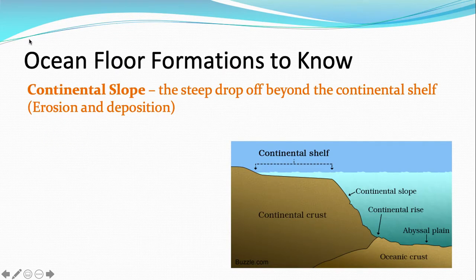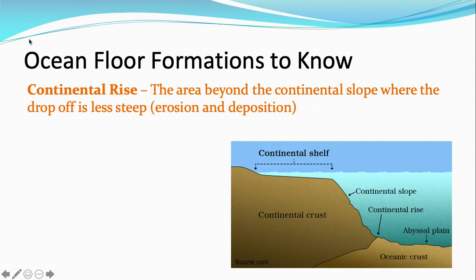The continental slope, if you go beyond the shelf, is the steep drop-off beyond the continental shelf, so it gets a lot deeper where the continental slope is. That is also formed by erosion and deposition. You'll notice that all of these formations have how they form listed in parentheses. Beyond the continental slope is the continental rise — that's when it stops being so steep, but it's still dropping off and getting deeper. The area beyond the continental slope where the drop-off is less steep is also formed by erosion and deposition.